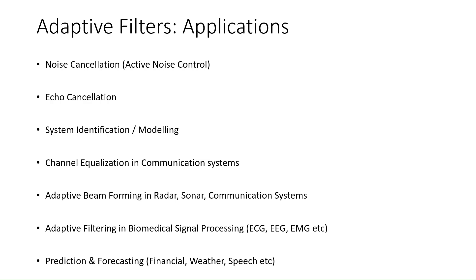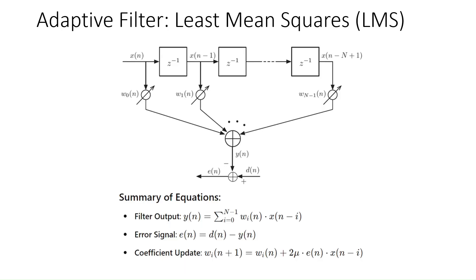The LMS filter is one of the most popular adaptive algorithms, but what exactly makes it so powerful? Let's break it down. In simple terms, an LMS filter works by adjusting its coefficients or weights to minimize the error between the desired signal and the actual output of the filter.